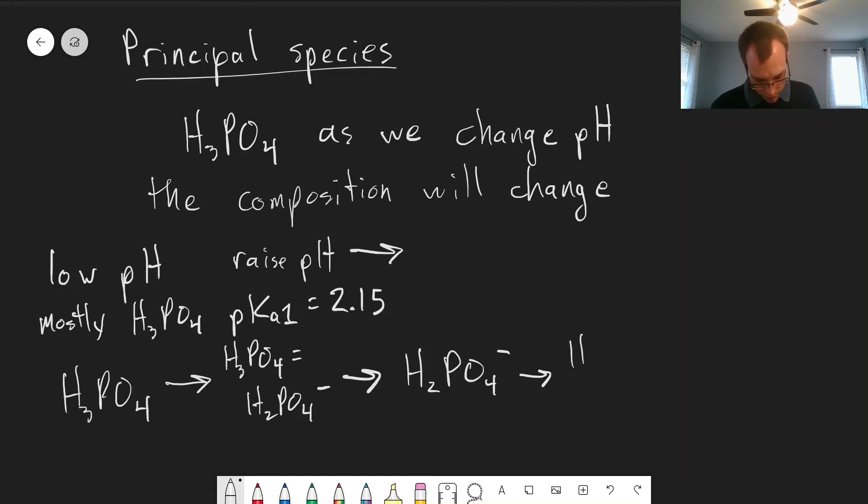And we'll reach a point where the amount of H2PO4 minus is equal to the amount of HPO4 2 minus. And this will occur at pKa2, which for phosphoric acid, this is 7.20.